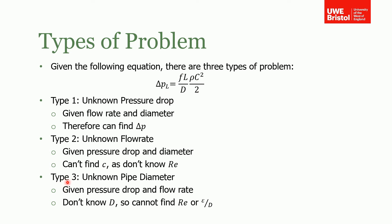For the Type 3 problem, we don't know the pipe diameter. We know the pressure loss and the flow rate, and therefore the velocity, but we don't know the diameter. If we don't know the diameter we can't find the Reynolds number or the relative pipe roughness, so we can't find the friction factor, and so on — it's a more complicated problem.